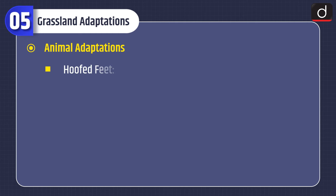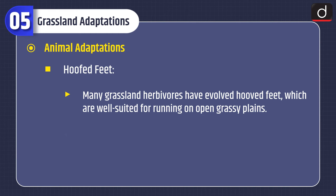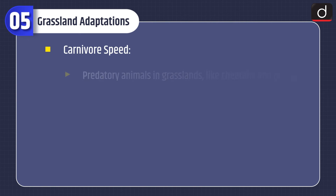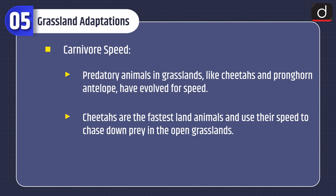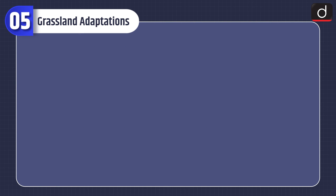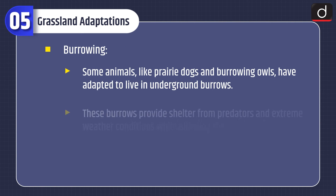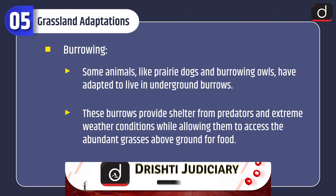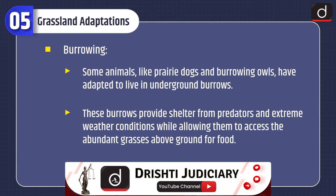Animal adaptations: hoofed feet — many grassland herbivores have evolved hoofed feet, well suited for running on open grassy plains, helping them evade predators and cover long distances in search of food and water. Carnivore speed — predatory animals like cheetahs and pronghorn antelope have evolved for speed; cheetahs are the fastest land animals and use their speed to chase down prey in open grasslands. Burrowing — small animals like prairie dogs and burrowing owls have adapted to live in underground burrows, which provide shelter from predators and extreme weather while allowing access to grasses above ground for food.